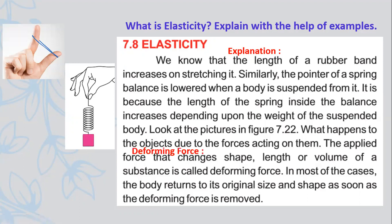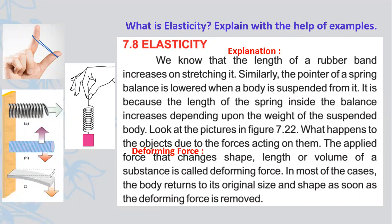Now we will look at further examples from figure 7.22. In this figure there are three different objects, and different forces act on them with different consequences. First, we have a spring where force is applied and the spring stretches. Second, a rod has parallel forces applied producing rotation. Third, a strip has force applied which causes deformation. Forces act on objects in different ways and results are different.